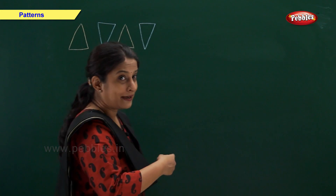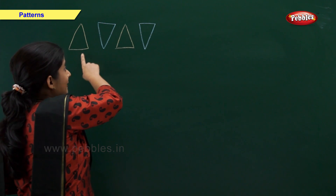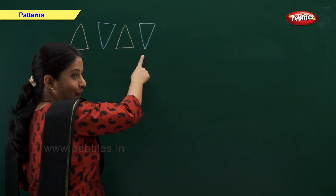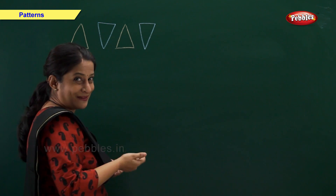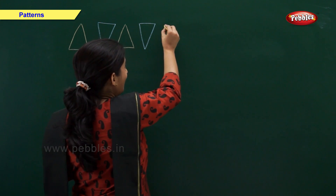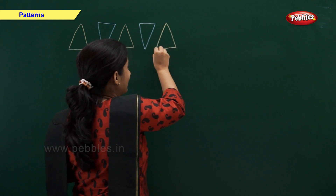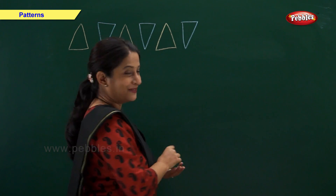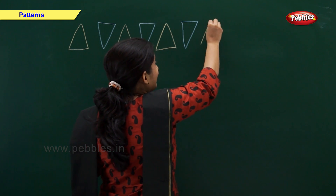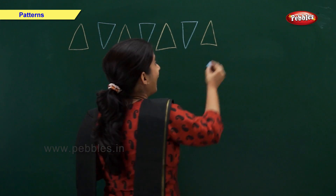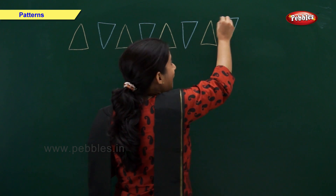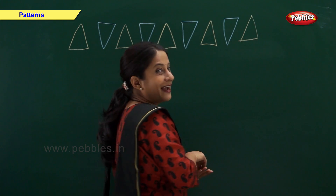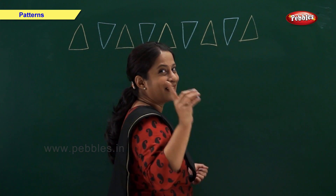In this pattern we have a yellow triangle and a blue triangle upside down. Yellow triangle and blue triangle upside down. So let's complete this pattern. We will draw a yellow triangle and a blue triangle upside down.